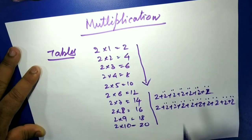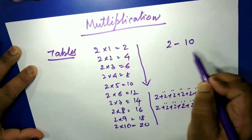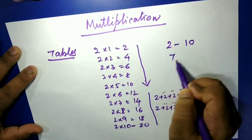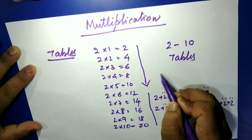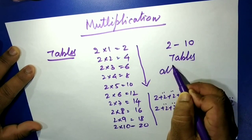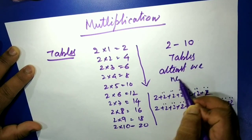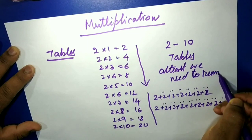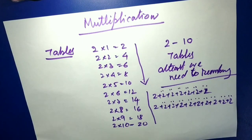Now we have to learn from two to ten at least — tables two to ten. At least we need to remember these. So we need tables two to ten.